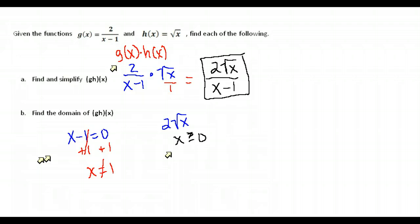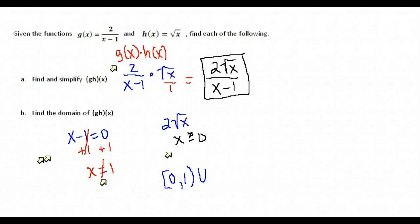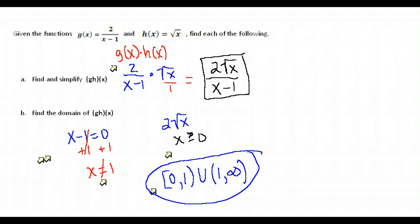Putting these two restrictions together: x has to be greater than or equal to zero, but it can't equal one. In interval notation, we start at zero with a square bracket — it can equal zero — and go from zero to one, stopping there because it can't equal one, so a parenthesis. Then union from one to positive infinity, with parentheses on the one showing it's not included. So our domain is all numbers greater than or equal to zero except for one, written as [0, 1) union (1, ∞). Hopefully this has helped you combine functions and find their domain.